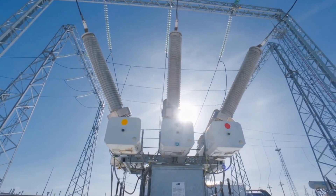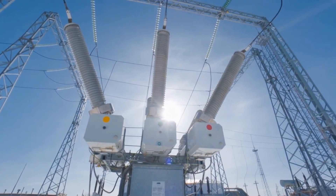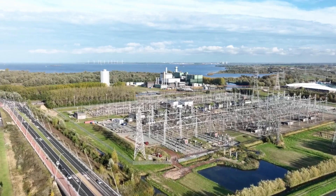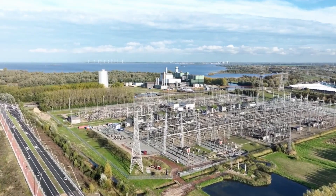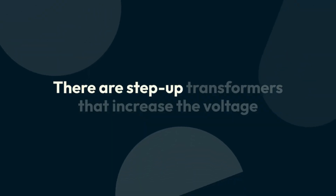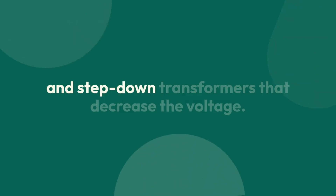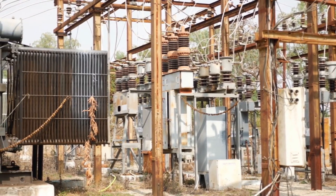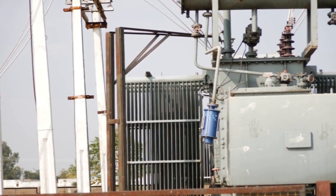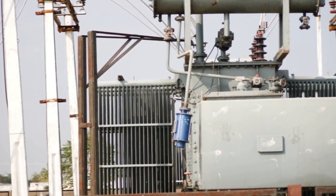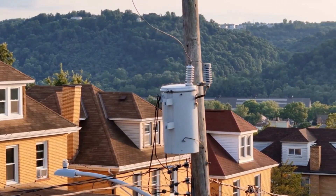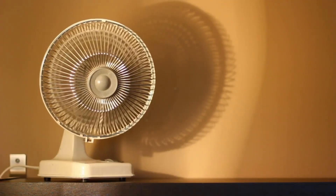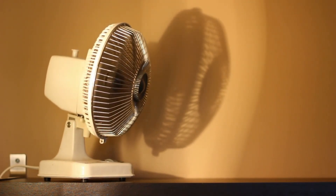What are the different types of transformers? Transformers are like magical boxes that change electricity levels. There are step-up transformers that increase voltage and step-down transformers that decrease voltage. Other types include power transformers, distribution transformers, isolation transformers, and auto-transformers. Each one has a special job in making sure electricity gets where it needs to go safely and efficiently.